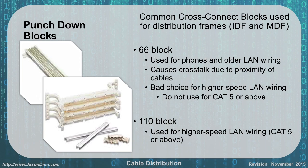Therefore the 66 block is a bad choice for any high-speed LAN wiring. The 110 blocks, on the other hand, are used for high-speed LANs — CAT5 and above networks — and provide more spacing between each cable, leading to less interference from crosstalk.